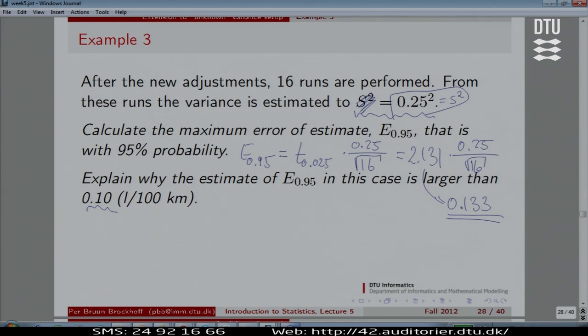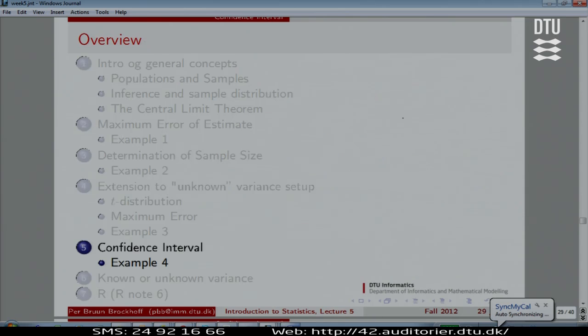We have less information. It is not as good to estimate the variance based on 16 observations as it would be to know it for sure. Knowing it for sure is like estimating it with infinitely many observations. And we do not do that with only 16. That was the T-distribution which we use when we have to estimate the variance, which we have often.